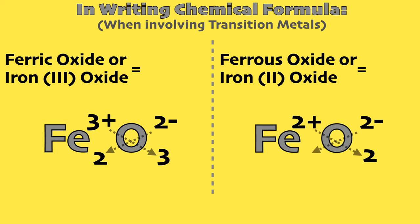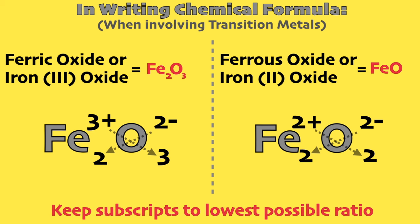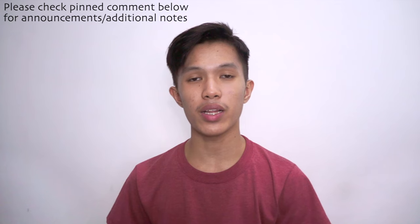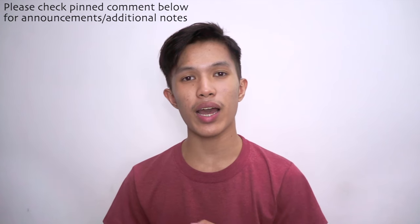Another important rule is to keep the subscripts in the lowest possible ratio. So we divide both by 2, and it becomes like this. We will tackle the chemical nomenclature of covalent bonds and polyatomic ions soon in our future videos.